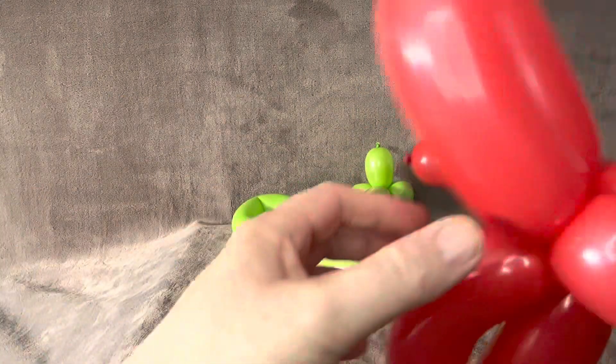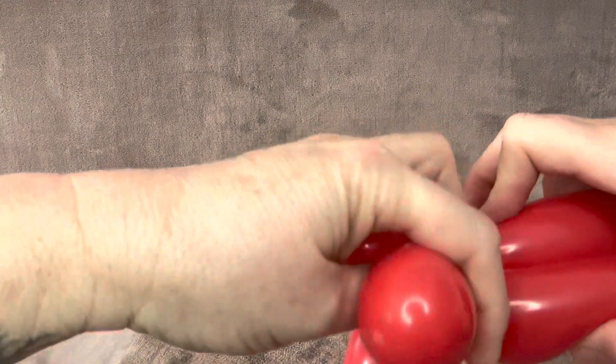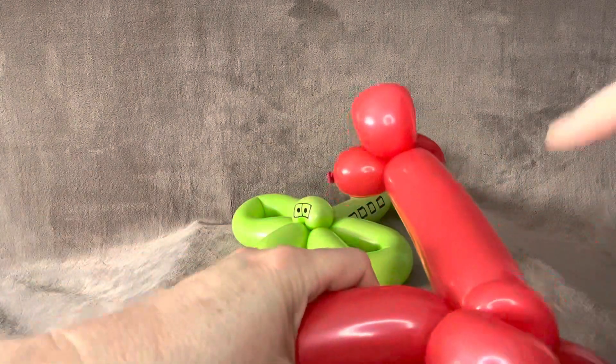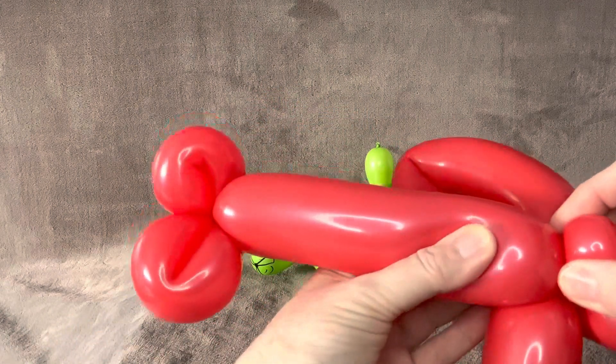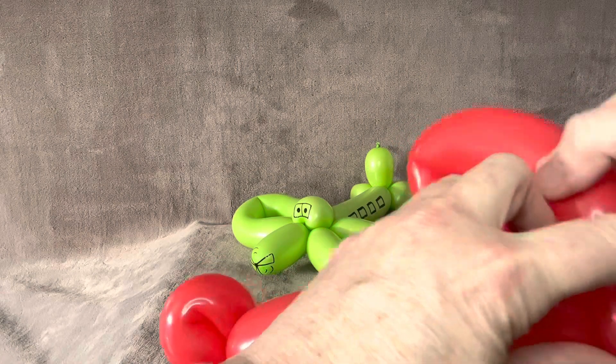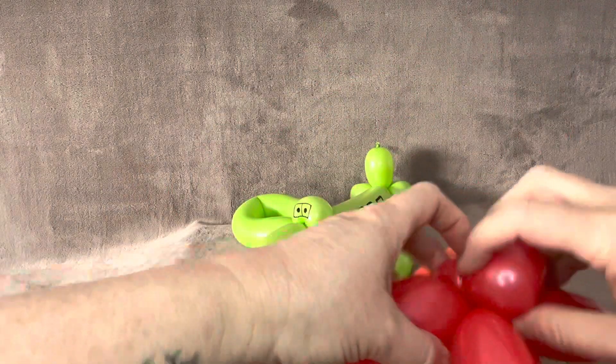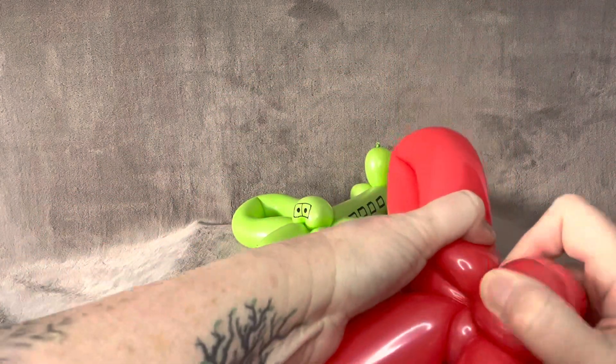Now, we just have the figuring which goes where thing to do. So, we want this on the bottom of the plane, the small one. Then, we want the wings to be beside that. And the big one goes up on the top.